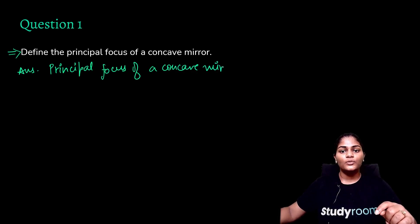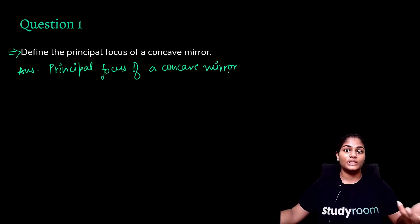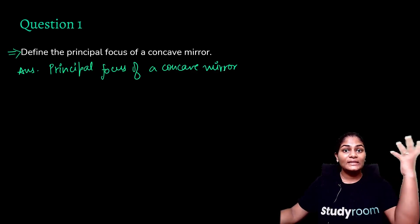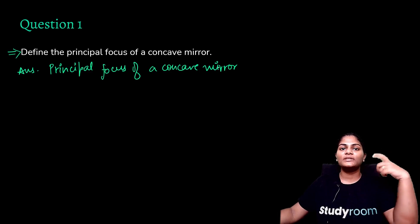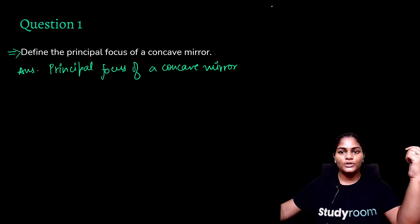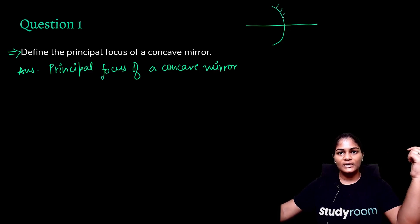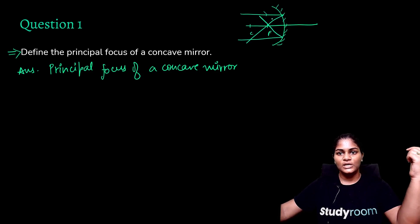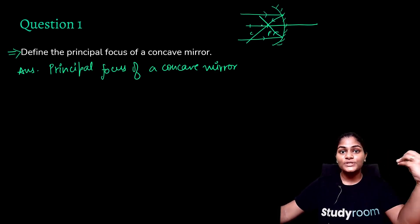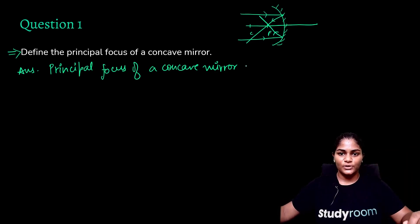I don't want you to unnecessarily remember things — I want you to always imagine the ray diagram in your head and then build the definition from there. In case of the principal focus of a concave mirror, whenever rays are coming from infinity, they go like this and they meet at the focus. The rays coming from infinity are meeting — or the word we use — converging.